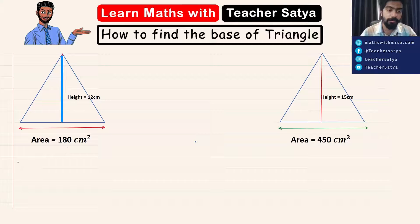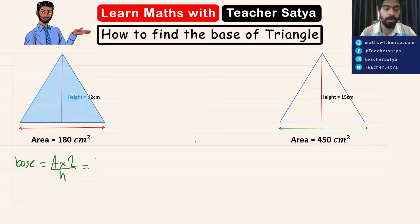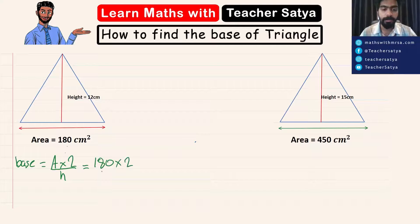Let's start off by writing the formula. The base, from what we just figured now, is the area multiplied by 2 divided by its height. So area times 2 divided by height. In this question we have area is 180 multiplied by 2 and divided by its height which is 12.